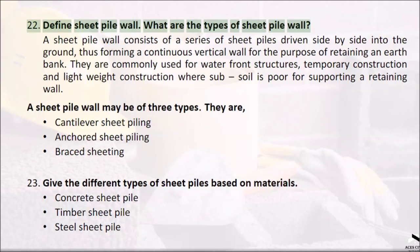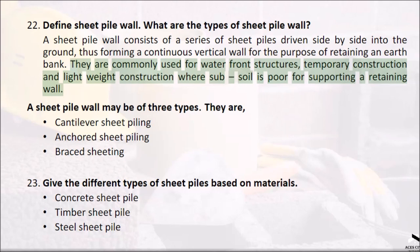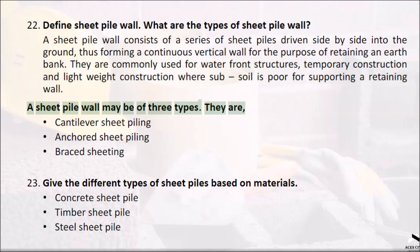Question 22: Define sheet pile wall. What are the types of sheet pile wall? A sheet pile wall consists of a series of sheet piles driven side by side into the ground, thus forming a continuous vertical wall for the purpose of retaining an earth bank. They are commonly used for waterfront structures, temporary construction, and lightweight construction where sub-soil is poor for supporting a retaining wall. A sheet pile wall may be of three types: cantilever sheet piling, anchored sheet piling, and braced sheeting.